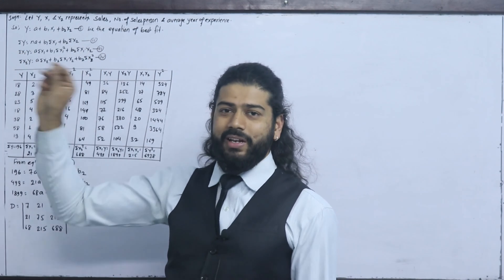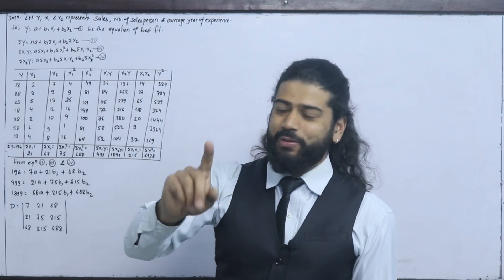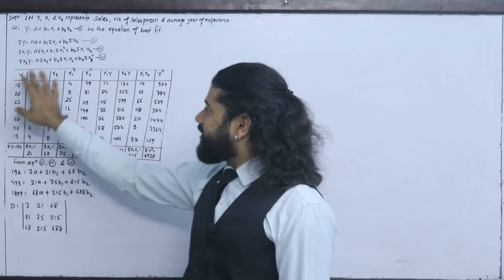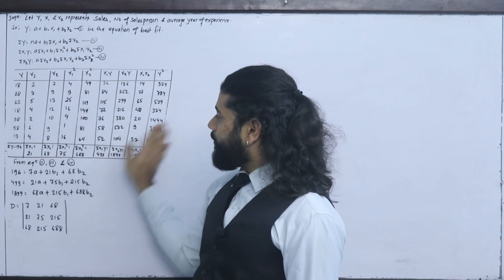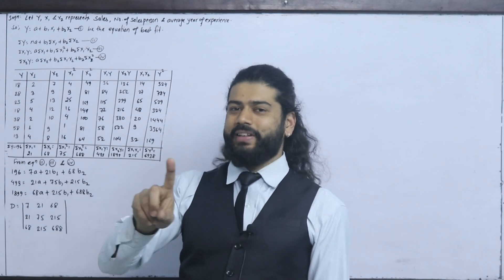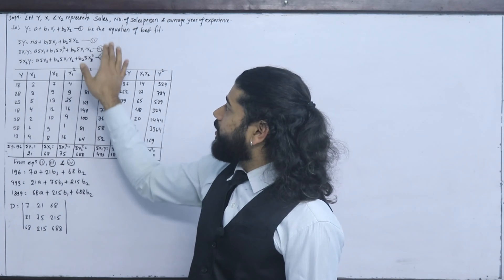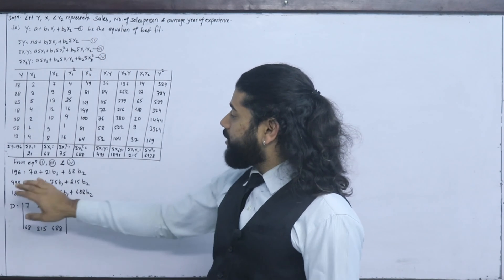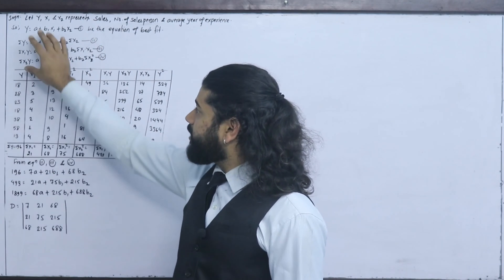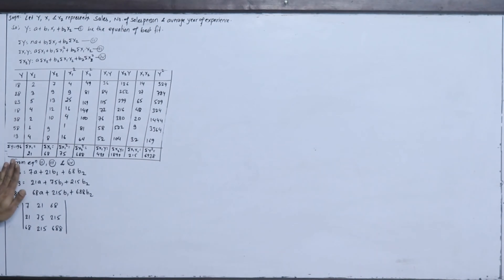This is the first step of the formula. We will write the first formula and substitute the values from the table. The values are: 7, 21, 68; the equation substitution begins here.